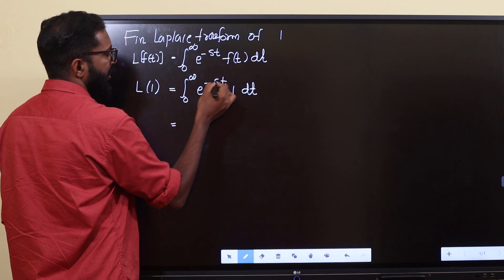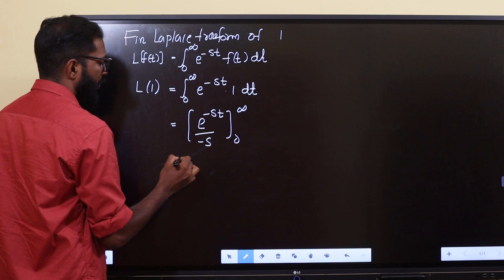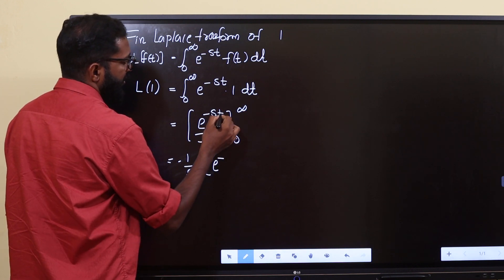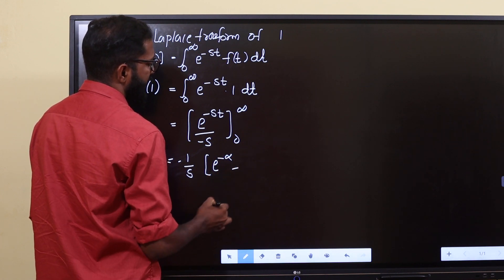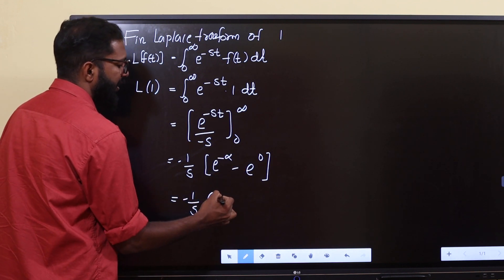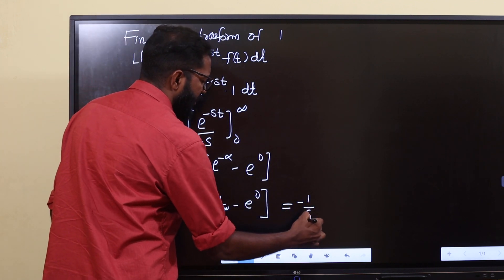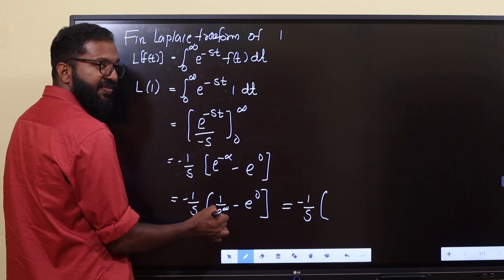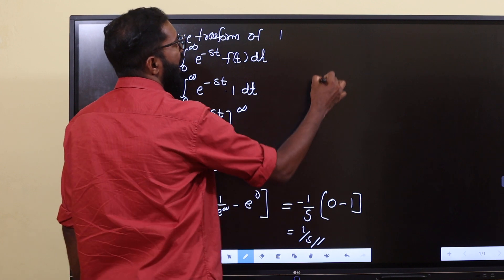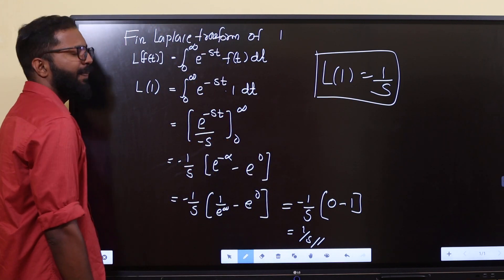That is equal to e raised to minus st divided by minus s, evaluated from 0 to infinity. That is equal to minus 1 by s times the upper limit minus the lower limit. The upper limit: 1 by e raised to infinity equals 0. Anything raised to 0 is 1. So 0 minus negative 1 by s gives us 1 by s. Therefore, Laplace of 1 is equal to 1 by s.